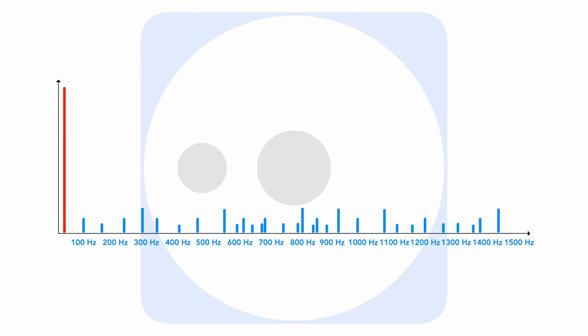If the spectrum shows a single high line at the speed frequency, the fault is unbalanced. For example, if there is only one high line at 25 Hz, calculating 25 times 60 gives 1500 RPM. If the speed is indeed 1500 RPM, the fault is unbalanced.